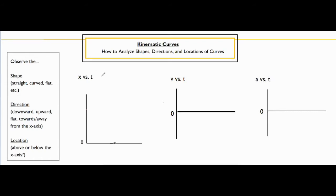Let's start with our position versus time graph. Our position versus time graph tells us the position at any given point in time of the object or thing that's in motion. If anything is rising on the graph, that just means it's moving in the positive direction. If anything is becoming lower on the graph, that means it's moving in the negative direction, but that doesn't tell us anything about how fast or slow they're going.